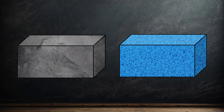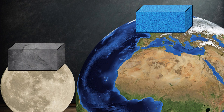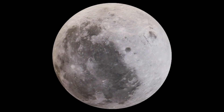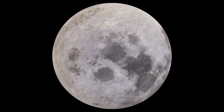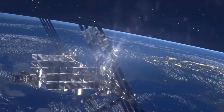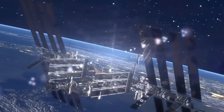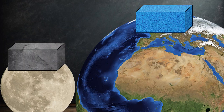Here's the big difference though. Weight depends on mass, but it also depends on the object's location. The force of gravity is not the same everywhere in the universe. For example, the moon has around one-sixth the gravity of earth. The international space station has no gravity at all. An object's mass stays the same regardless of location.